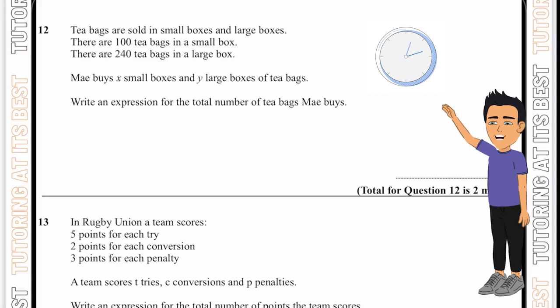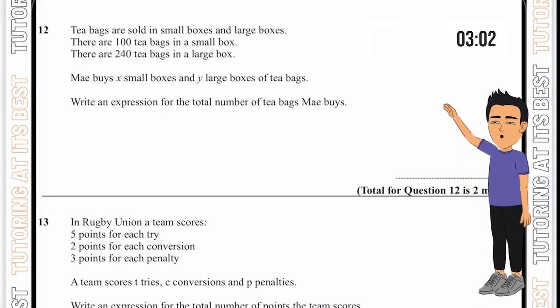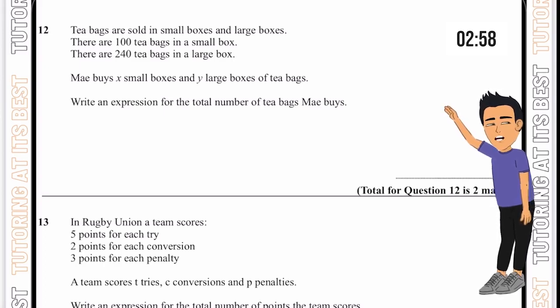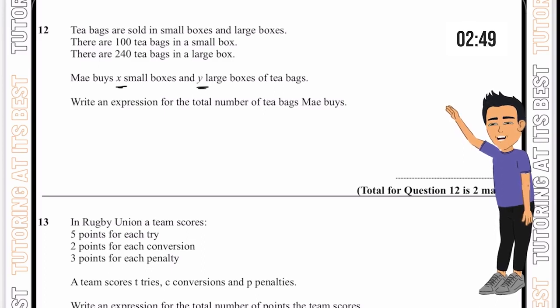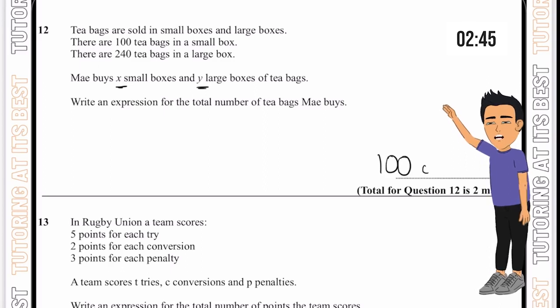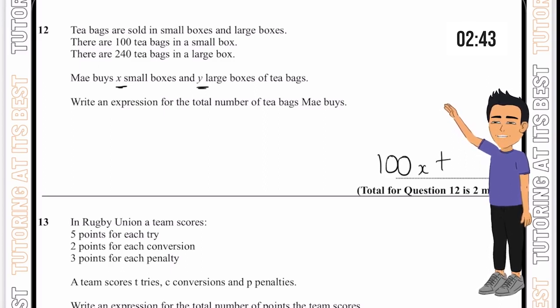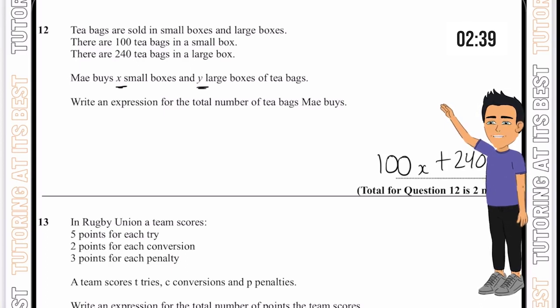Question 12. Tea bags are sold in small boxes and large boxes. There are 100 tea bags in a small box and 240 in a large box. May buys x small and y large. Let's put that into an expression. We'll have 100 tea bags multiplied by x plus 240 tea bags multiplied by y. That is our expression done.